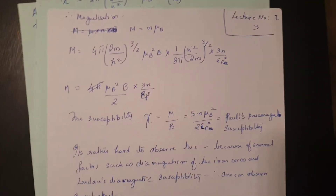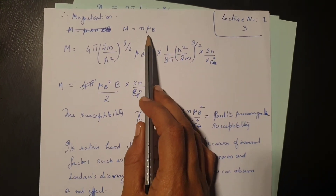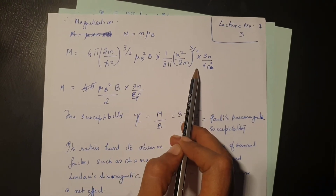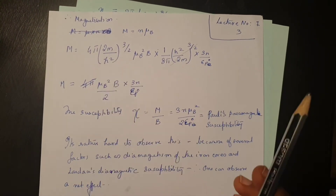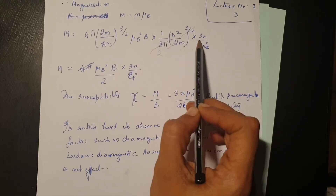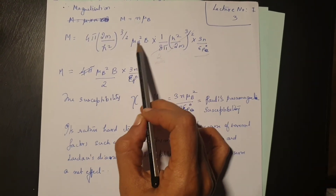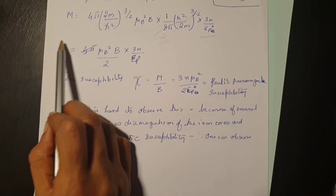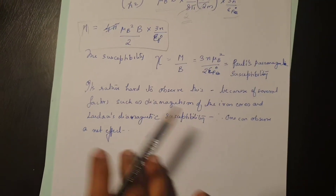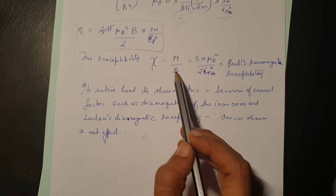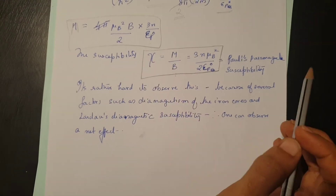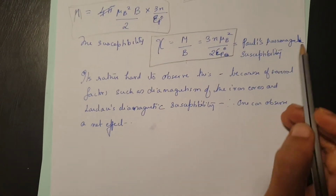Magnetization M equals n times mu_B. Substituting the value of n obtained previously, terms like 8-pi and 4-pi cancel, leaving 3n, E_F0, a factor of 2, and mu_B squared times B. The final expression for magnetization M is given by this value. Magnetic susceptibility chi is then given by magnetization divided by the magnetic field B, yielding a specific formula.